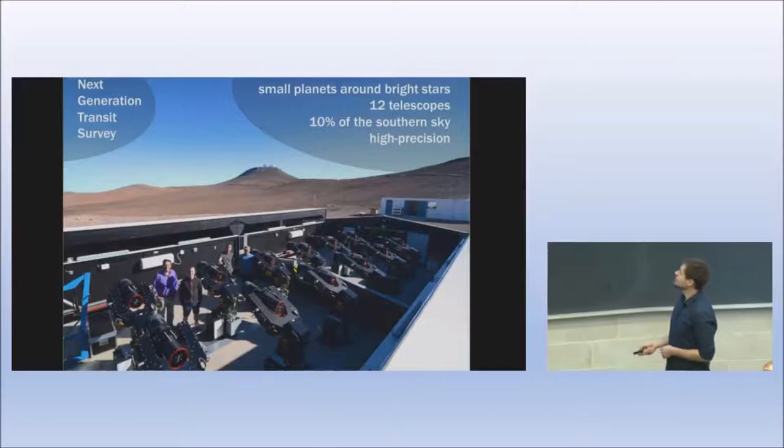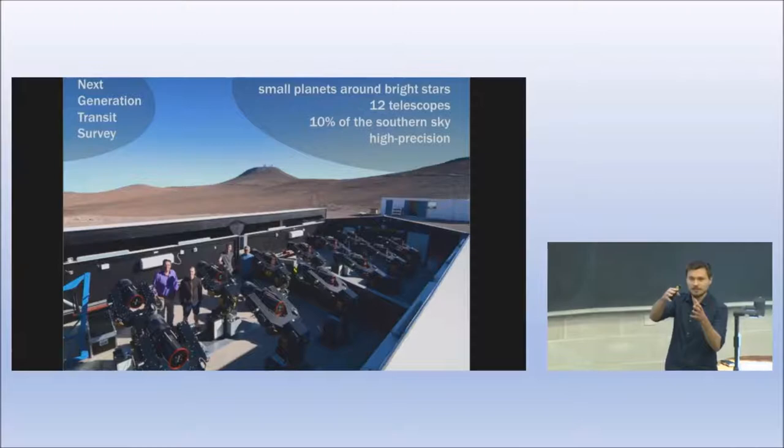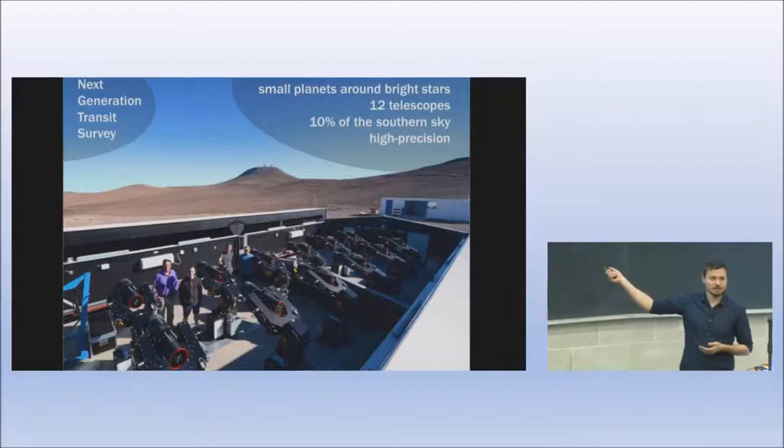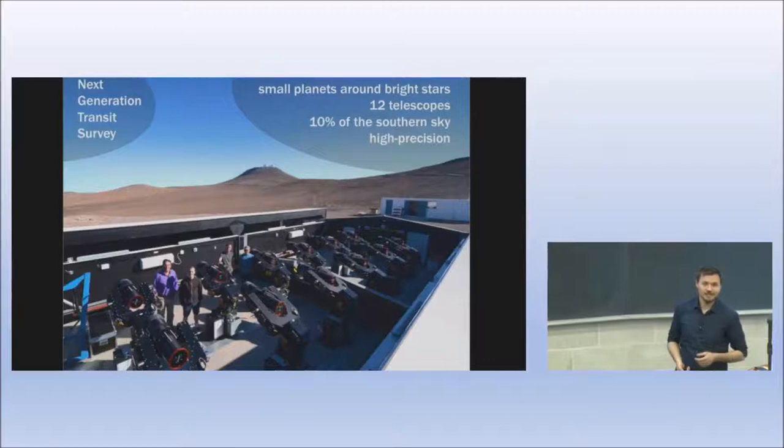NGTS, the Next Generation Transit Survey, is 12 telescopes with 20 centimeter diameter based at ESO's Paranal Observatory in Chile, in the Atacama desert, the driest desert in the world. It's also the location of the Very Large Telescopes, the VLT.